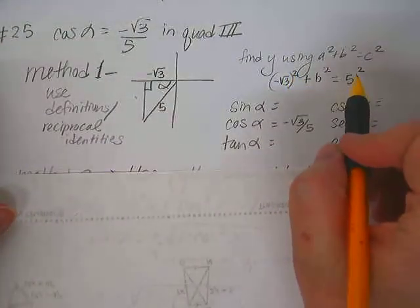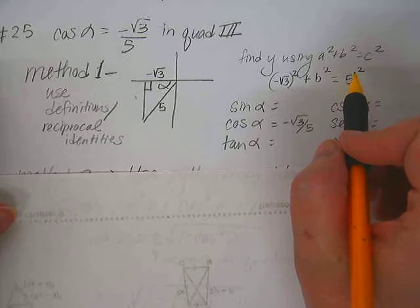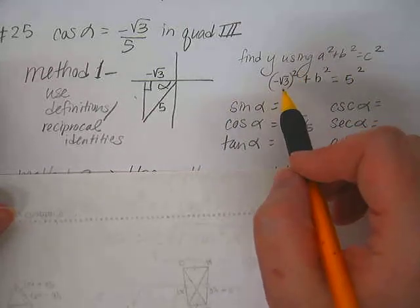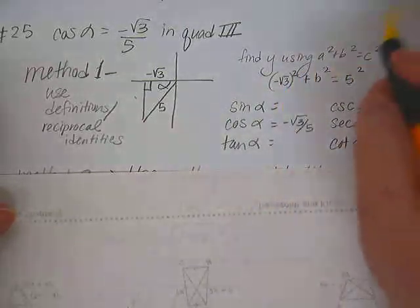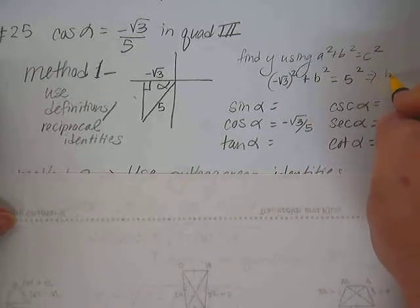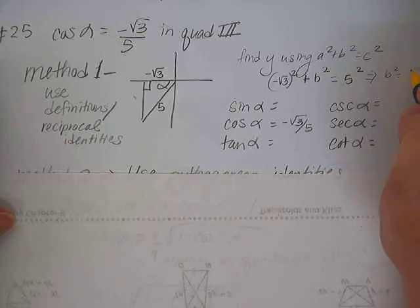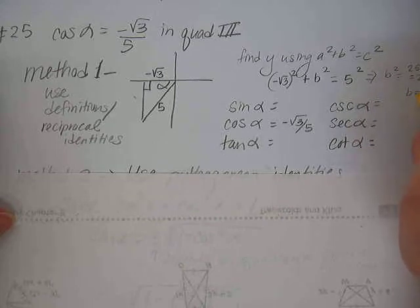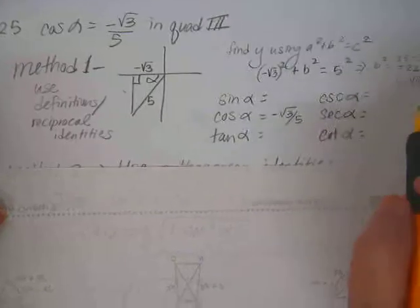So then if we simplify that, 5 squared is 25, what's the square root of a square root? 3. So then we would subtract that 3 from both sides, so we would have b squared equals 25 minus 3, which is 22. So then that other leg is the square root of 22.